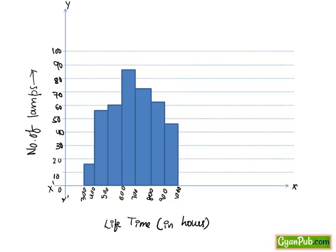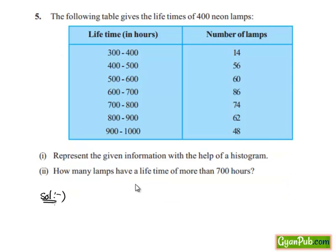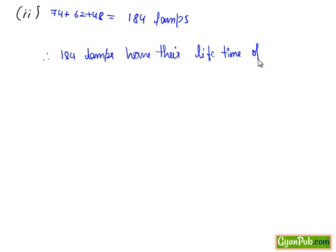Now let's move on to question two. How many lamps have a lifetime of more than 700 hours? Here they have asked for the lifetime of more than 700 hours. That is from 74, it is more than 700. That is 74 plus 62 plus 48, which equals 184 lamps. 184 lamps have a lifetime of more than 700 hours.